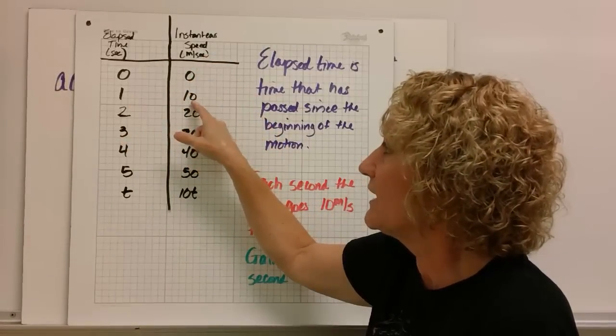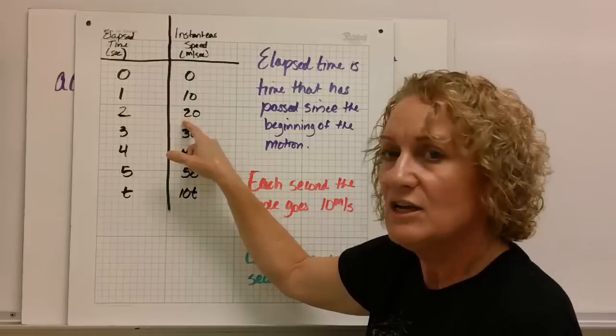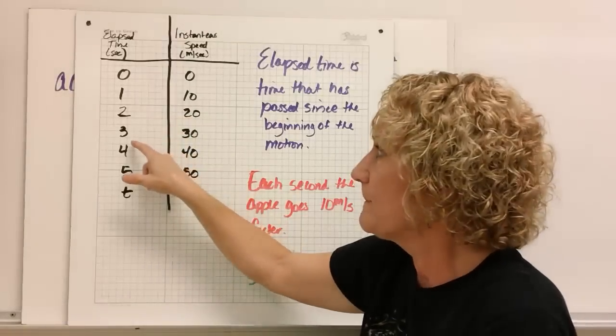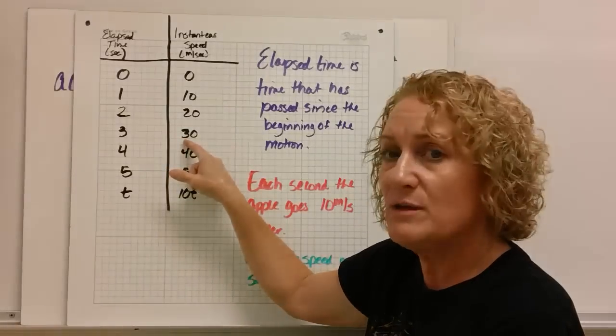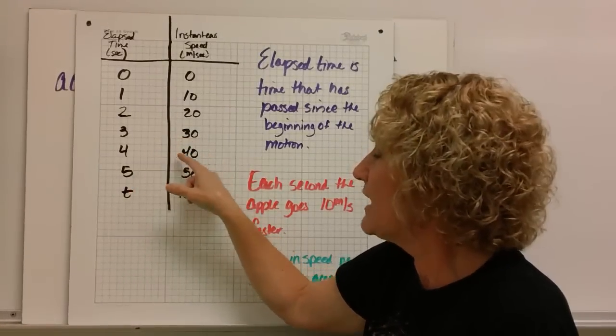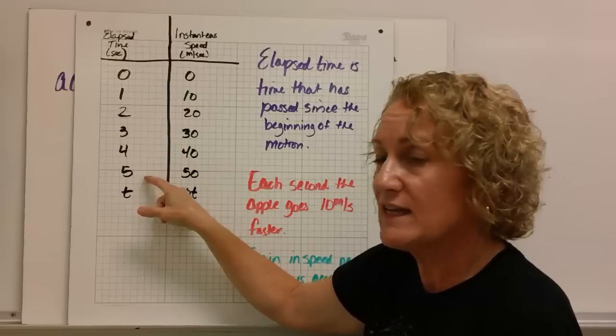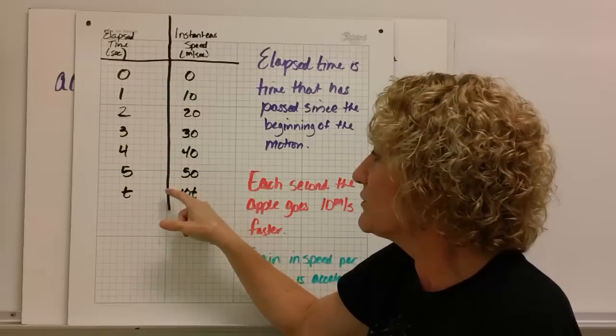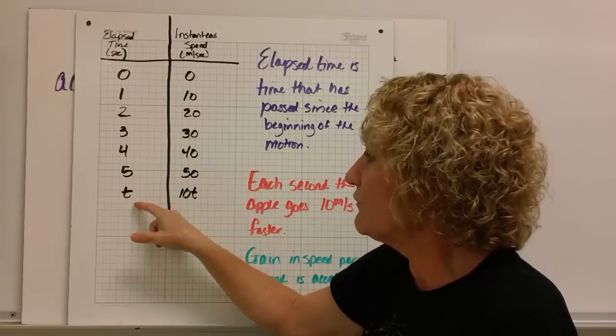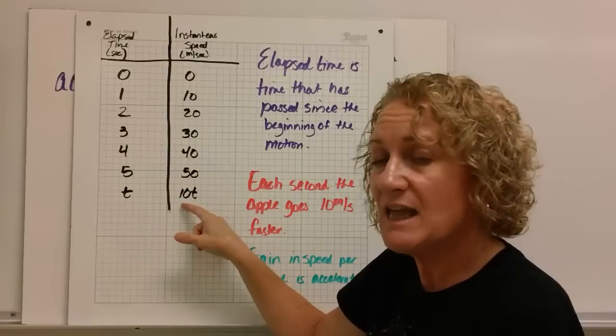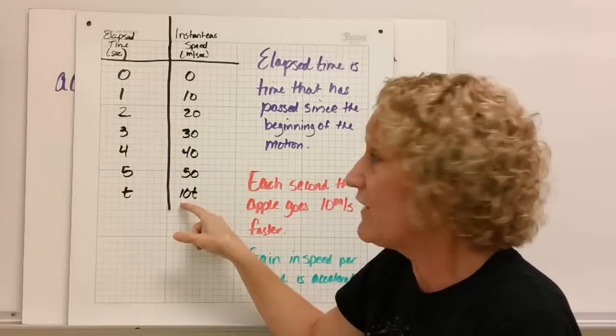After one second, it's going 10 meters per second. After two seconds, 20 meters per second. After three seconds, 30 meters per second. Are you seeing a pattern here? After four seconds, 40 meters per second. After five seconds, it's been falling for five seconds now, it's going 50 meters per second. So whatever number we put in for time, 10 times that in terms of seconds is how fast it's going to be going.